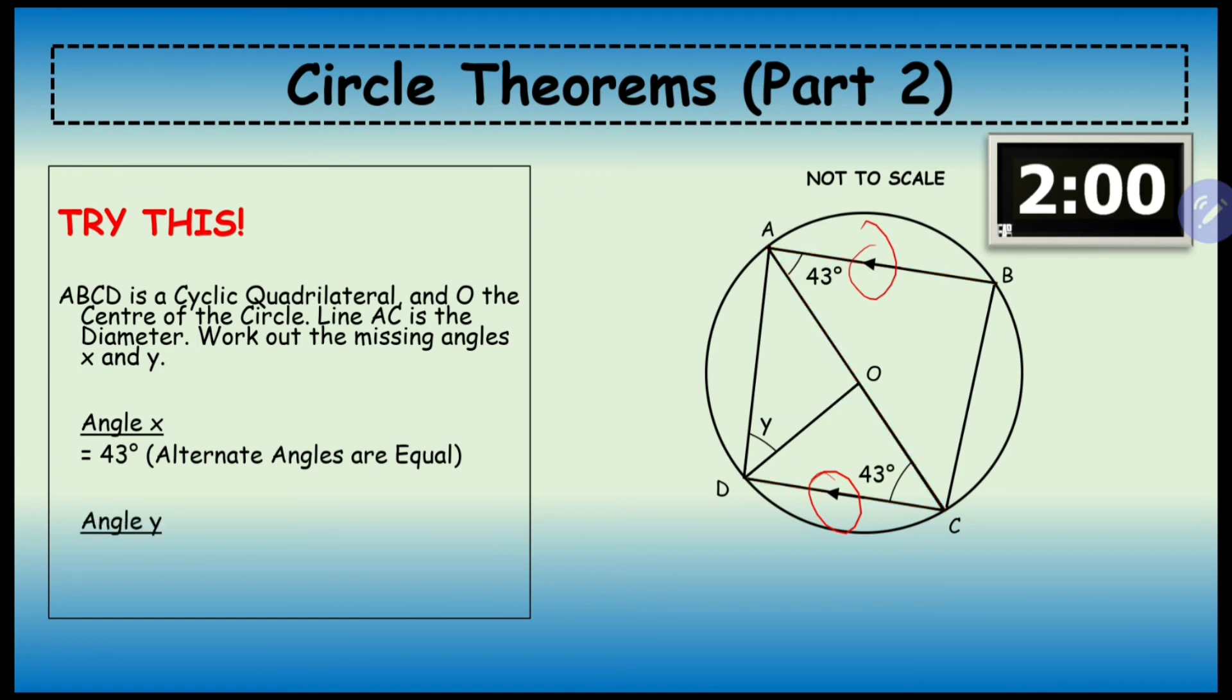Now angle y - if you can see this, from the center O to C is a radius and from the center to D is also a radius, so that forms an isosceles triangle where one angle here is 43 degrees, which means the other angle should also be 43 degrees.